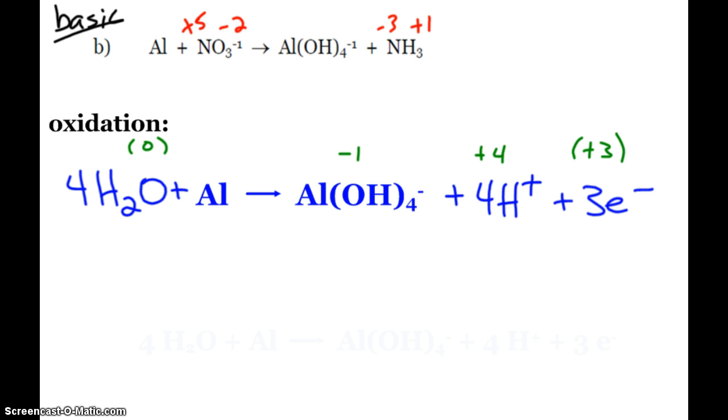So now both sides end up with a charge of zero. It doesn't always have to be zero, but both sides have to have the same charge. So my overall balanced equation for the oxidation half, or for this half of the problem, four waters plus aluminum makes the aluminum hydroxide complex ion, four hydrogen ions, and three electrons.